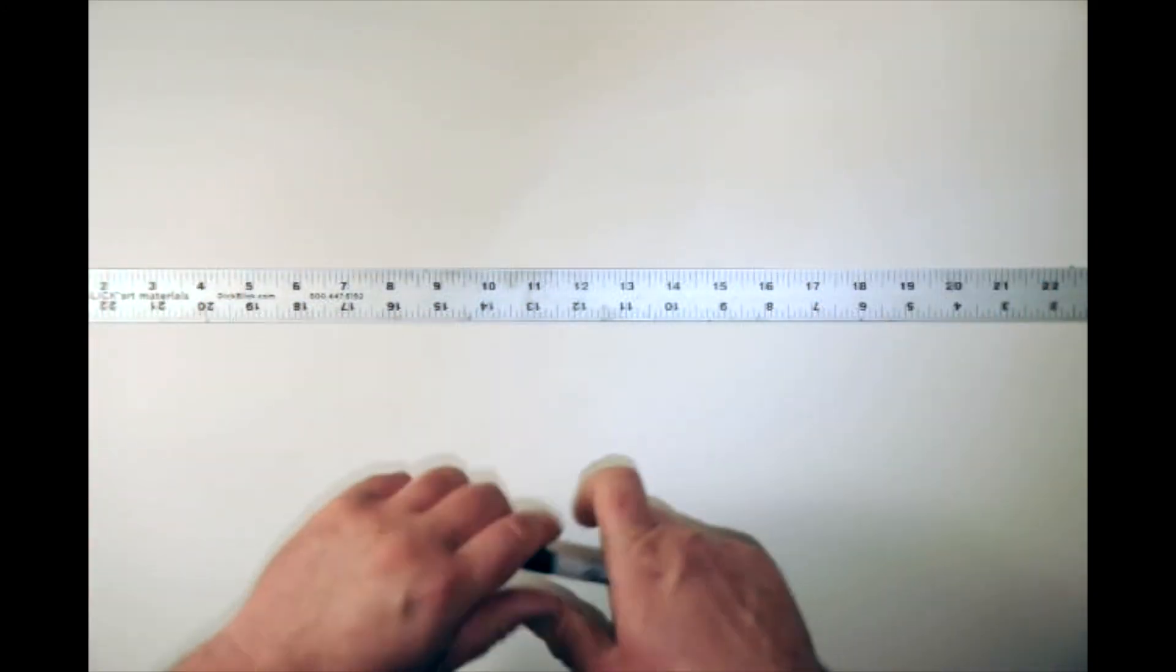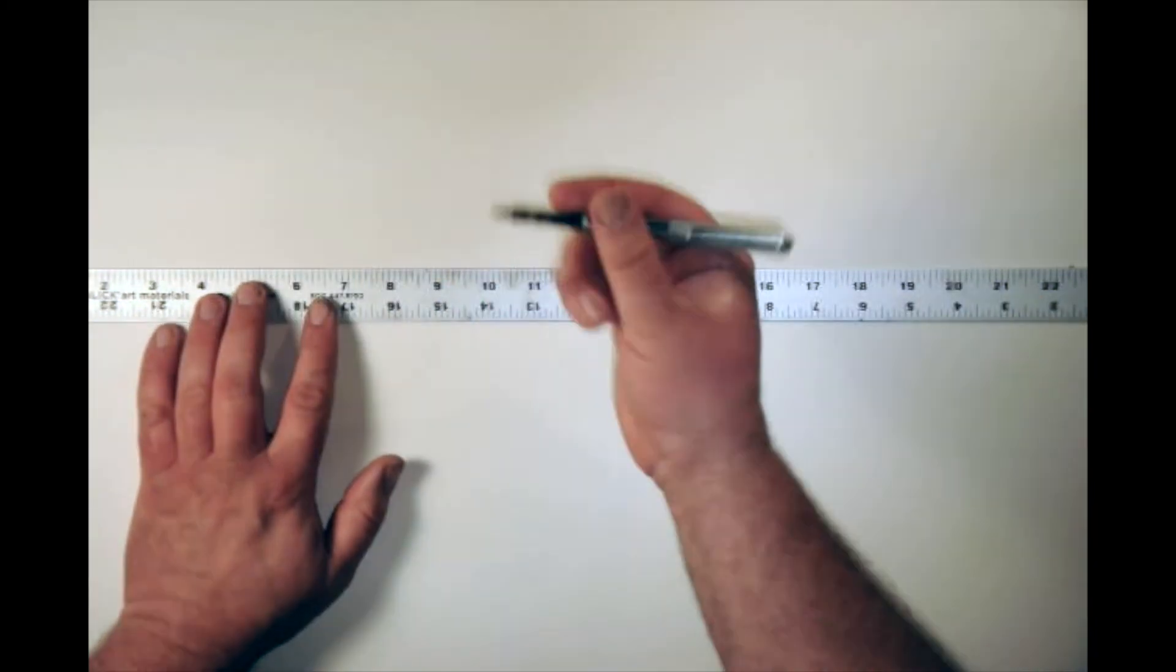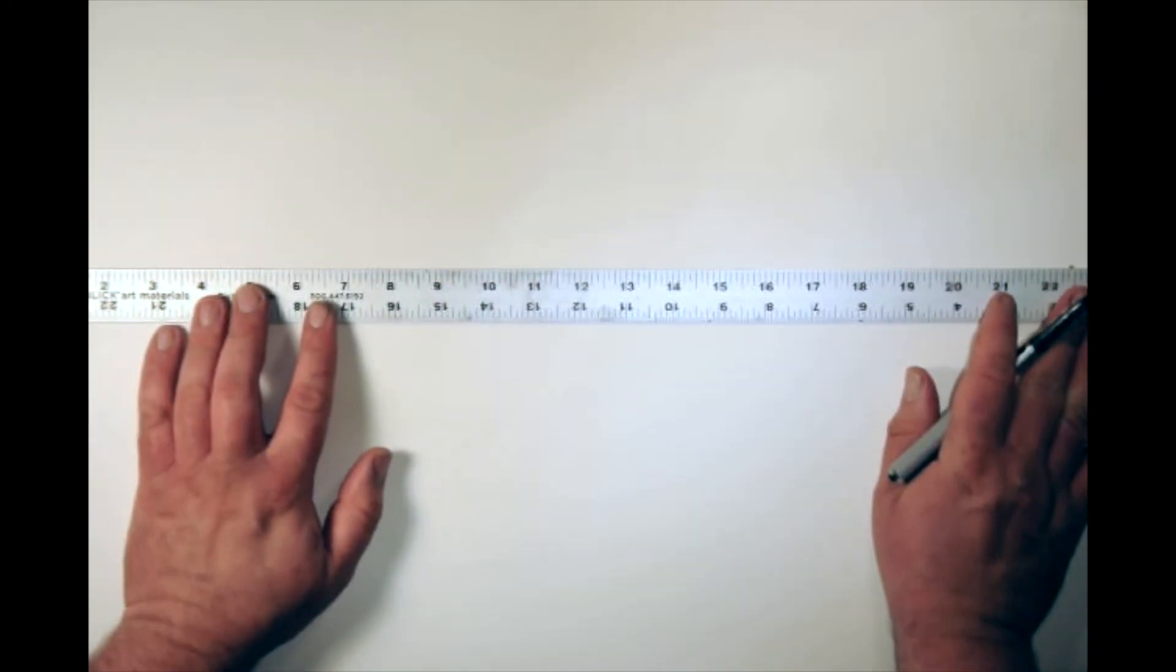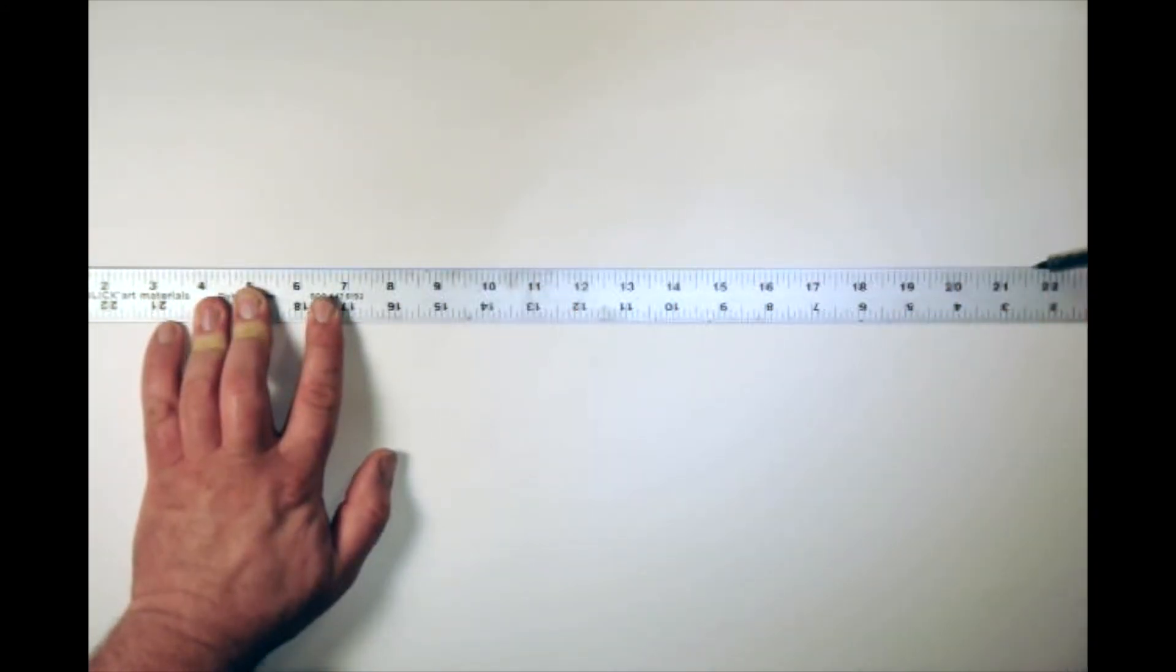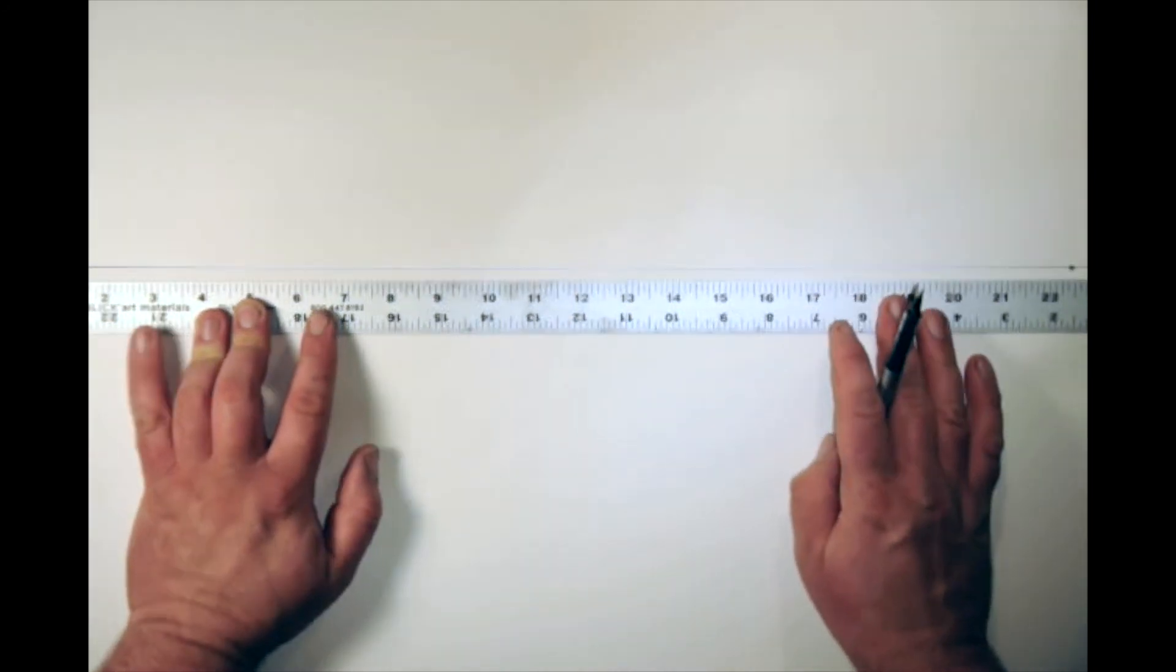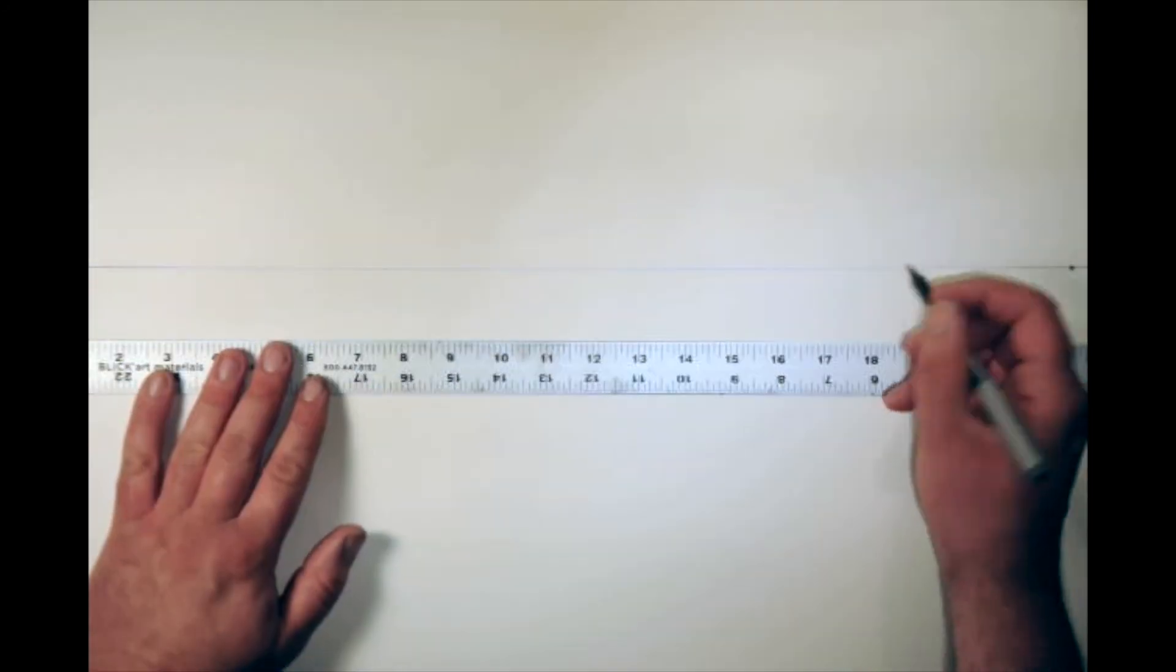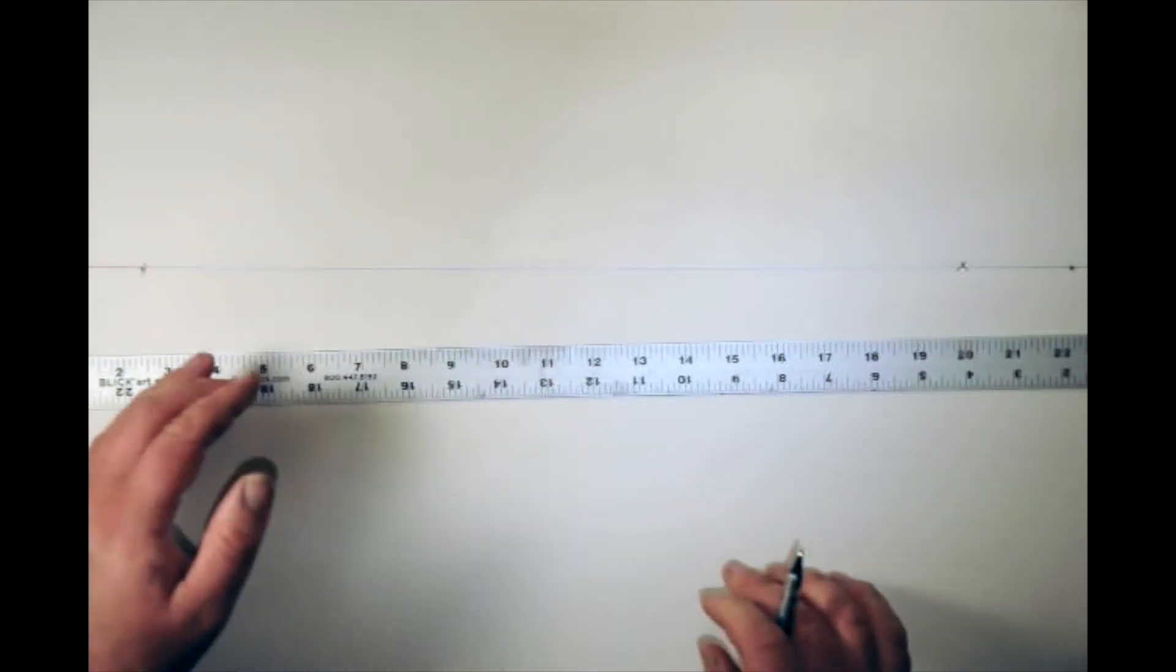So the first thing we need to do is make our horizon line. I'm going to use my thin pen for this because we're going to end up drawing a lot of lines and I don't want it to get too confusing. And just like before, we need to add some vanishing points.